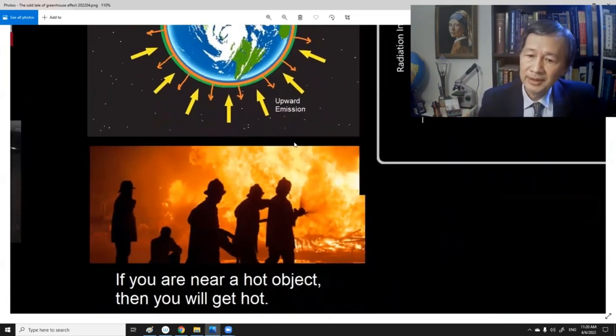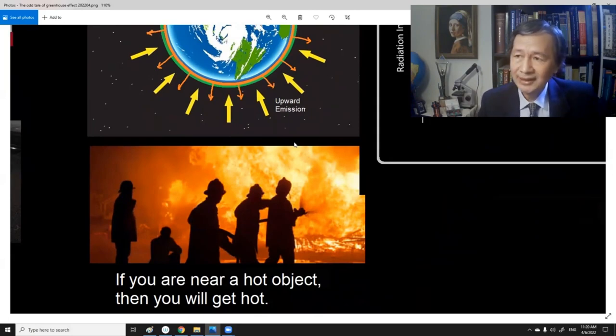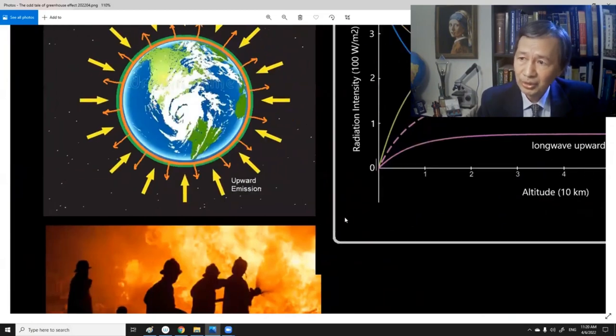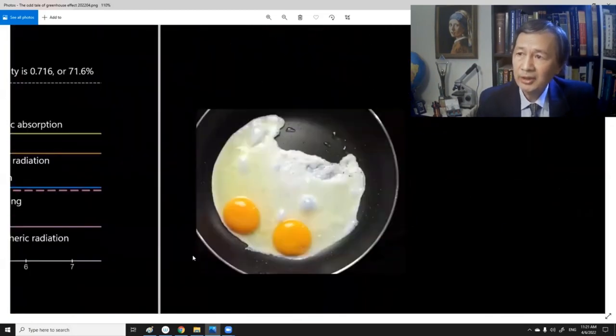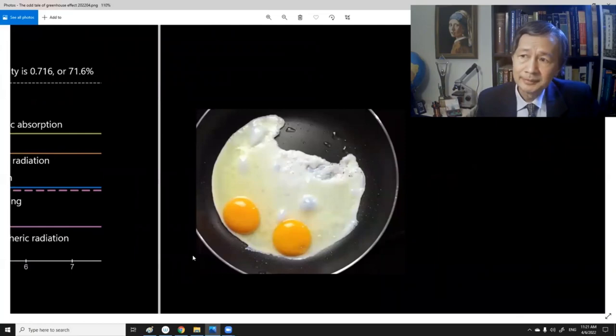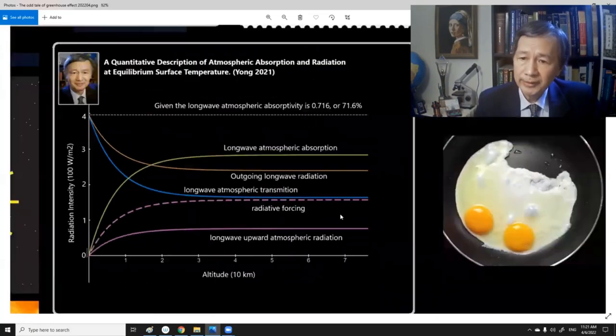Just like if you walk near the hot object, like the bushfire, then you will get hot. That is required by thermodynamics. Not the other way around. Just because you're getting warmed, then you can get the Earth warmer, which is not true. Are you worried about that the cooked egg can burn the pan?